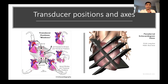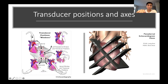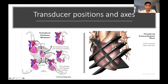Now that we know what a transthoracic echo is, let's think about the different positions and axes. The transducer is the device that you're emitting the ultrasound waves from, and there are different positions you can place it. You can have the parasternal position, which is the third or fourth left intercostal space. You also have views from the apex of the heart, subcostal, and suprasternal.